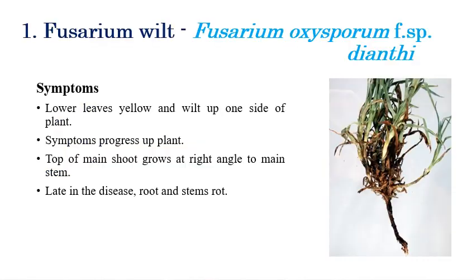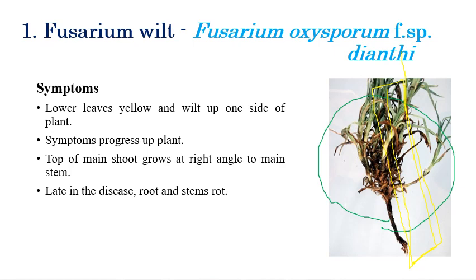The first disease is Fusarium wilt, caused by Fusarium oxysporum f.sp. dianthi. The symptoms include yellowing of lower leaves, and one side of the plant may be affected while the other side remains okay. Symptoms progress and spread to other parts in later stages. In severe cases, the entire stem and root system show complete wilting symptoms.